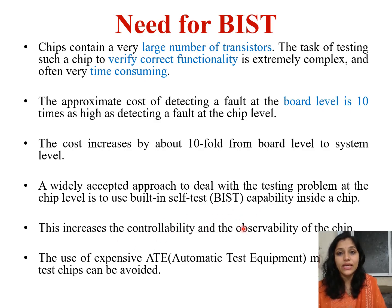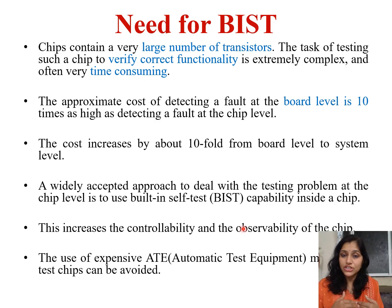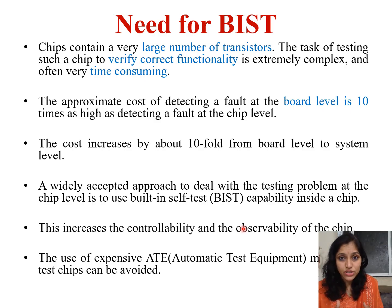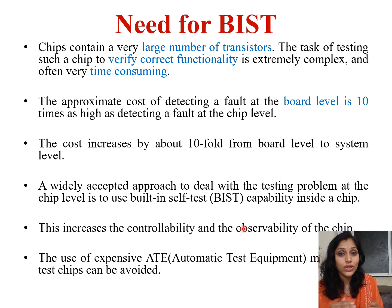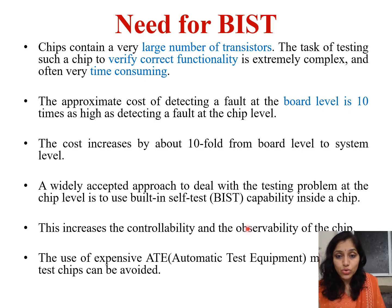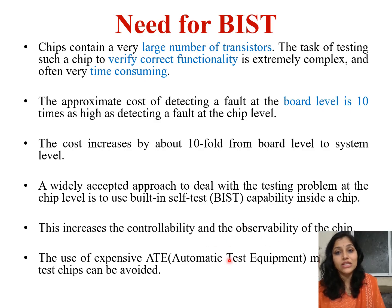BIST increases controllability and observability. Testability means the ability to test my chip. To test a simple AND gate, I apply some inputs — I am controlling my inputs. I apply test vectors like 00, 01, 10, 11. Those are called test vectors, and applying them means I am controlling the inputs of the AND gate — that is called controllability. After applying those inputs, I check my output, and that checking of output is called observability — whether I am able to observe my output or not.